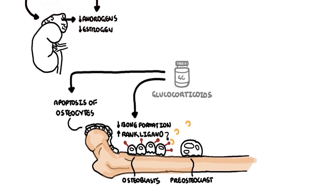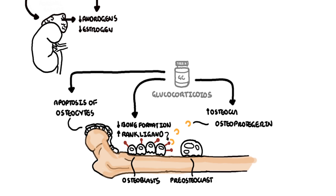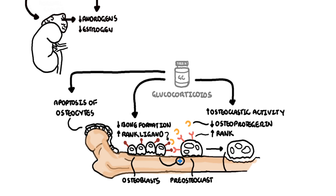Normally there is a molecule called osteoprotegerin, which regulates the osteoblast-osteoclast interaction by binding to the RANK-ligand, preventing osteoclast stimulation. However, glucocorticoids increase osteoclast activity by suppressing synthesis of osteoprotegerin and by increasing production of RANK, which is required for osteoclastogenesis. RANK-ligand binds onto RANK on osteoclasts, stimulating osteoclastic activity — forming active osteoclasts which break down bone minerals, a process termed bone resorption.